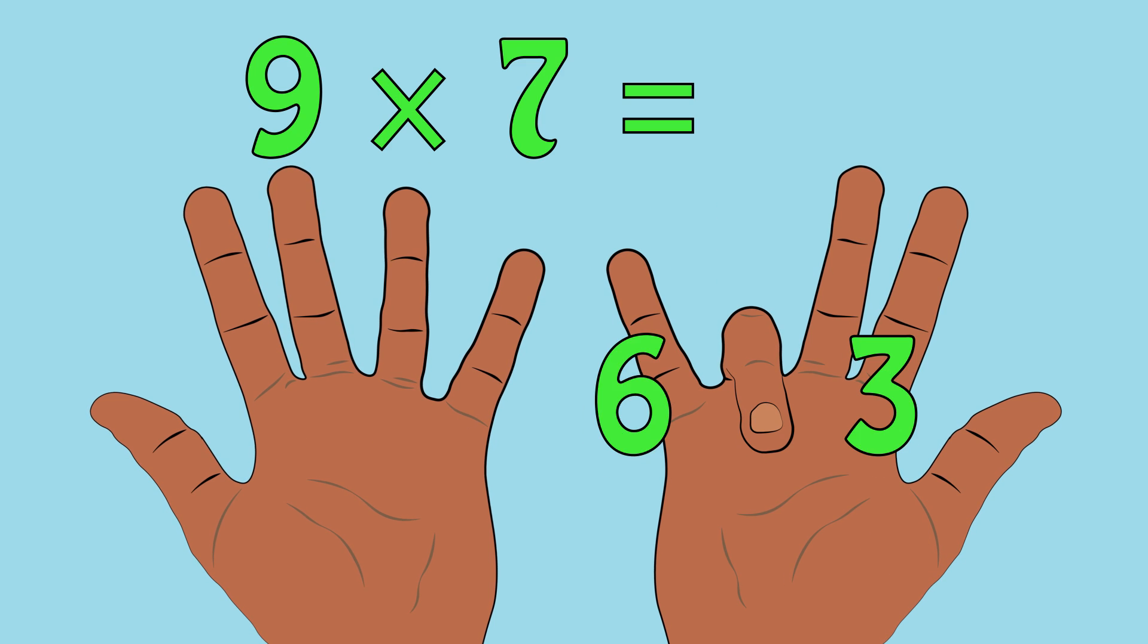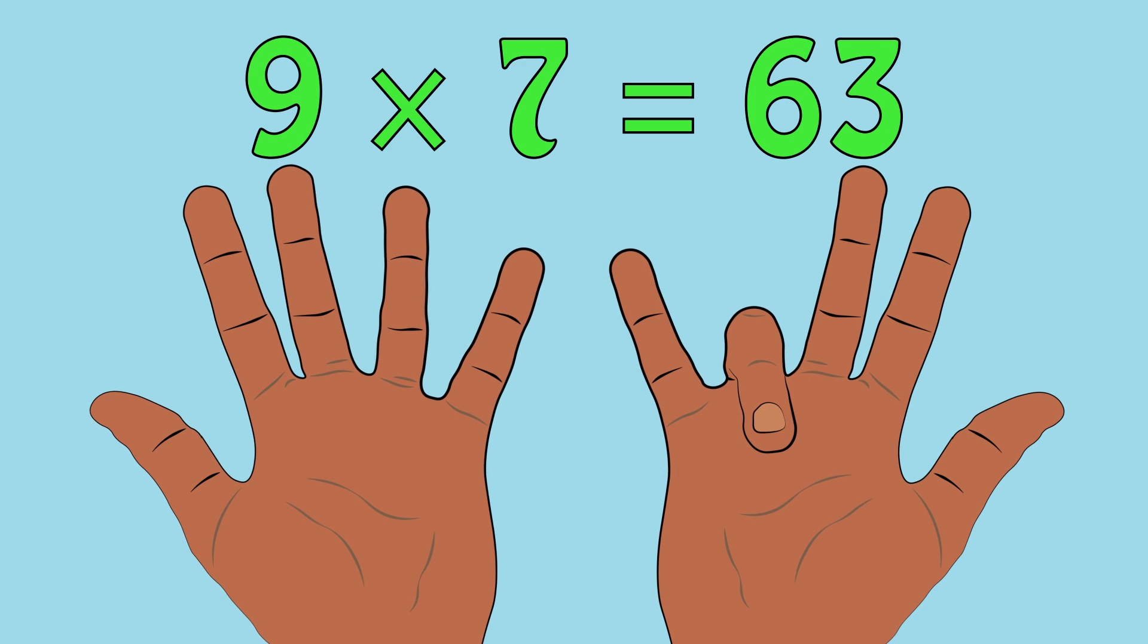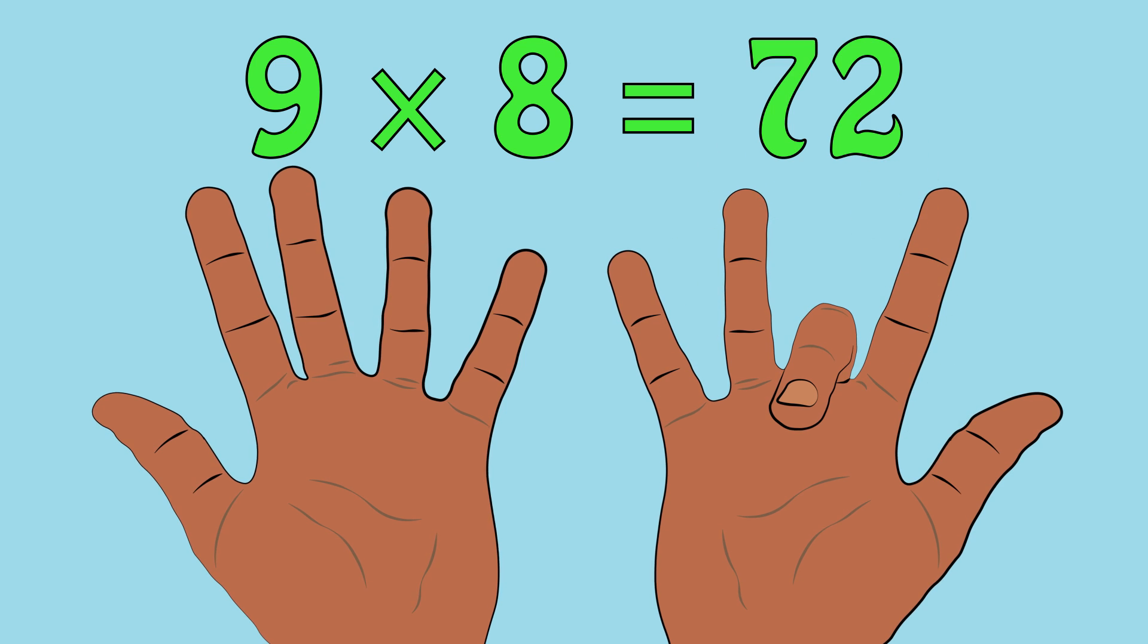9 times 7 equals 63. 9 times 8 equals 72.